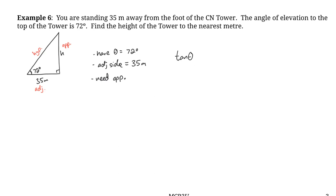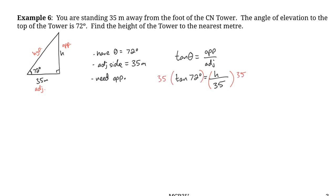Setting up the equation: tan(72°) = h over 35. Multiplying both sides by 35 to isolate h gives the height of the CN Tower ≈ 107.72 meters.